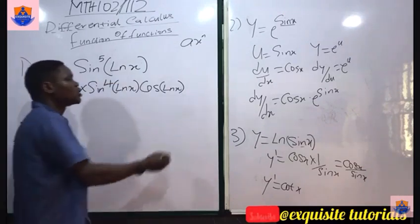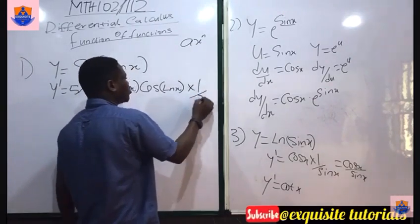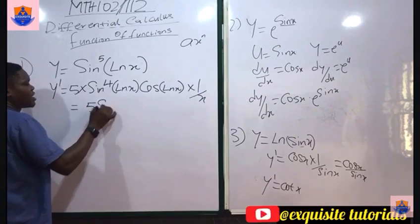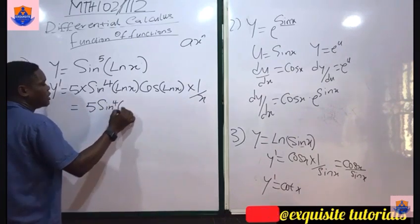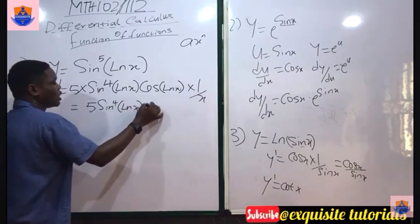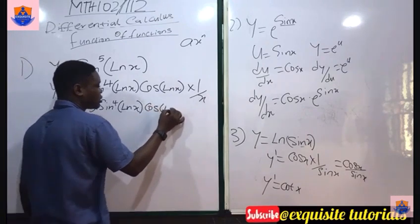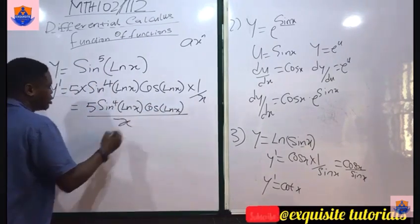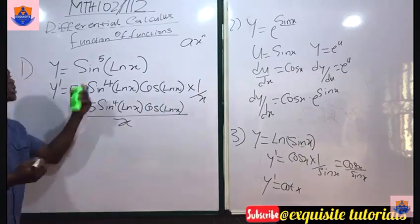When you differentiate ln x, you obtain 1 over x. So your final answer becomes 5 sine to the power 4 of ln x, then cos of ln x, all over x.